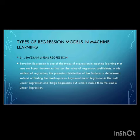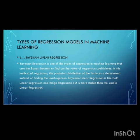The sixth one is Bayesian linear regression. Bayesian regression is one of the types of regression in machine learning that uses Bayes' theorem to find out the value of regression coefficients. In this method of regression, the posterior distribution of the feature is determined instead of finding the least squares. Thank you.